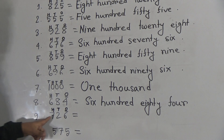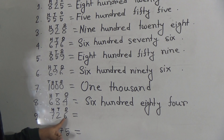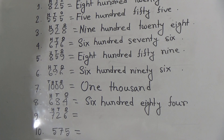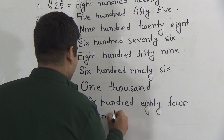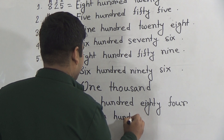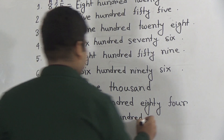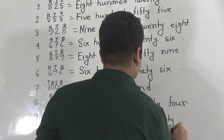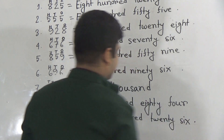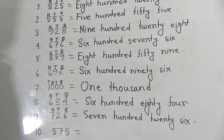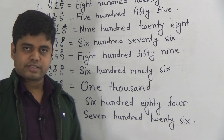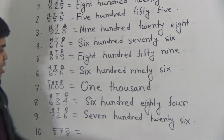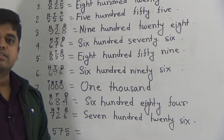That means 726. Now write: S-E-V-E-N. Seven hundred twenty six. Then 726 — T-W-E-N-T-Y. Twenty. And six: S-I-X. And hundred: H-U-N-D-R-E-D.